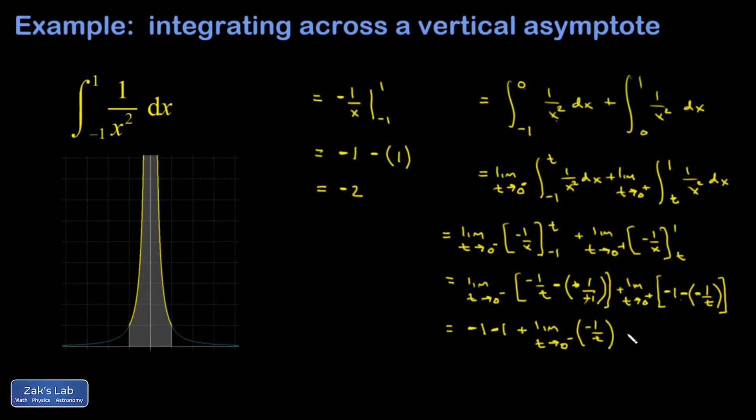Keep in mind, t is a negative number the entire time in the limit. Then I have the limit as t goes to 0 from the right of positive 1 over t. It's interesting to see this negative 2 reappear, but the real value of the integral is found from these limits.